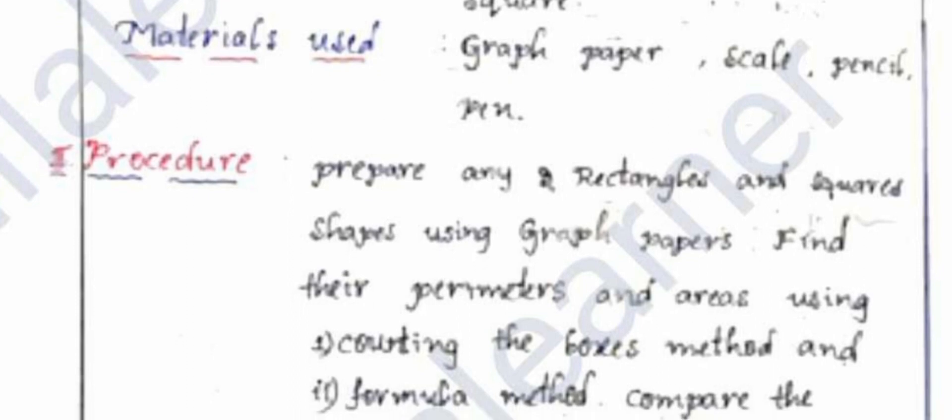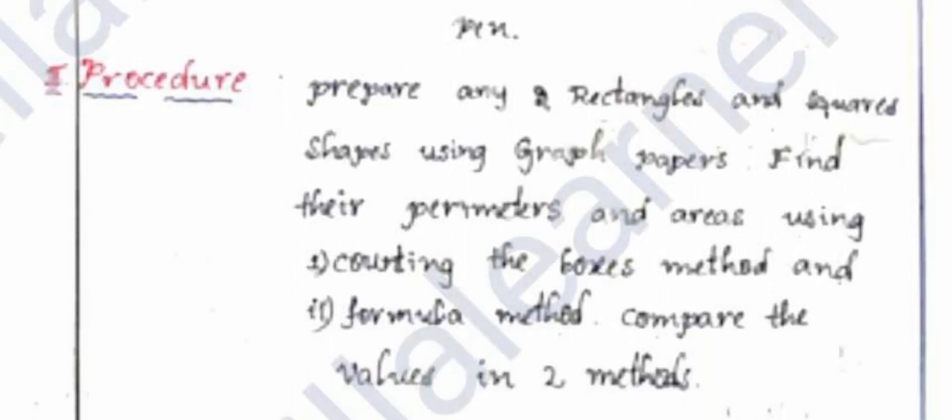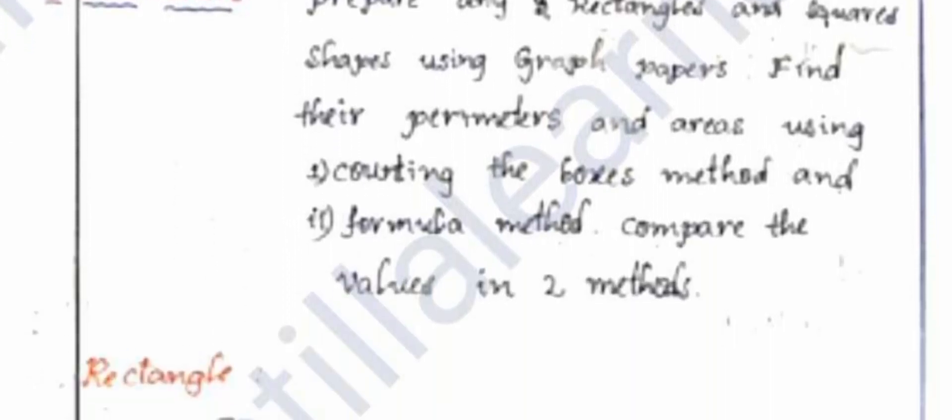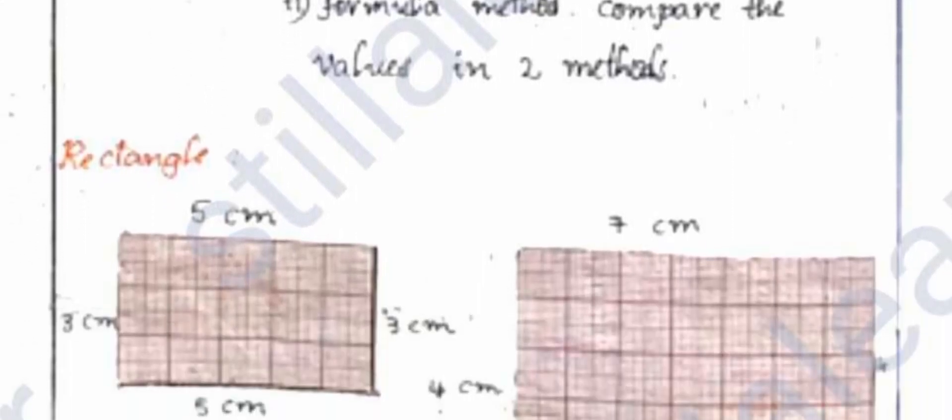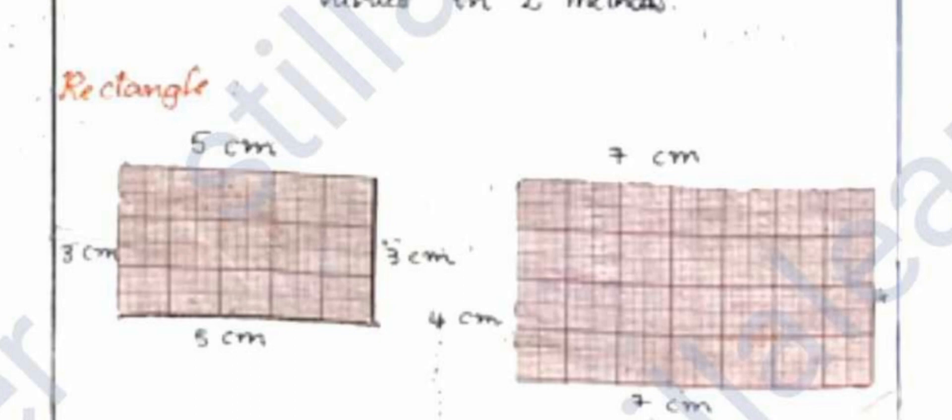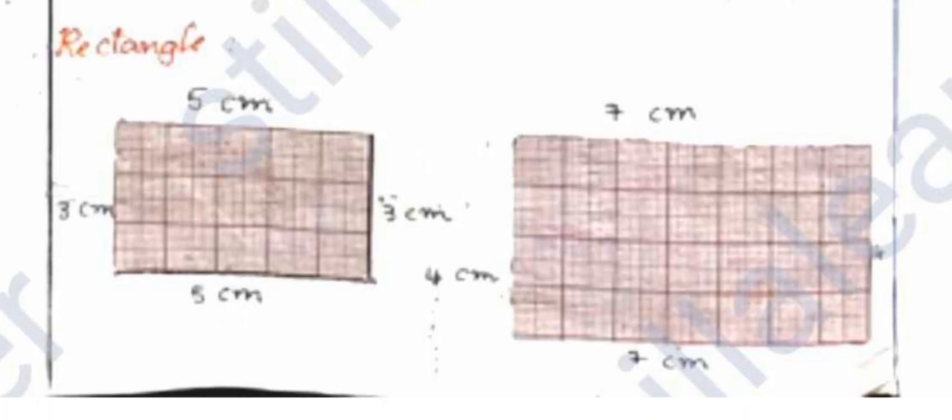Next, write the name of the lesson, which means which unit you are taking for the project. Then write the title of the project. After that, list the materials used—graph paper, scale, pencils, and so on. You have to write and cover each and every heading without any mistake.